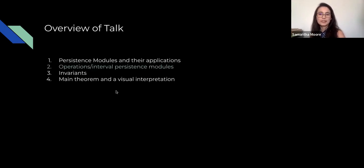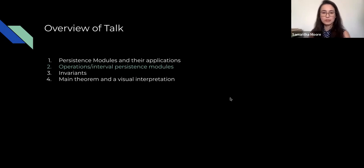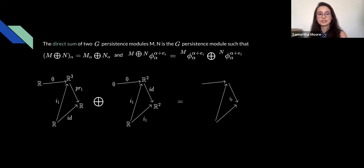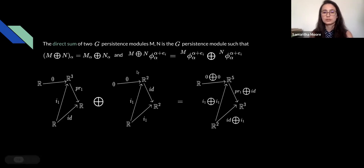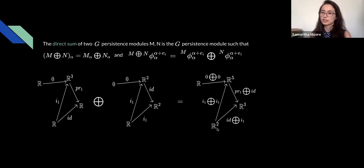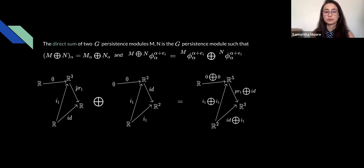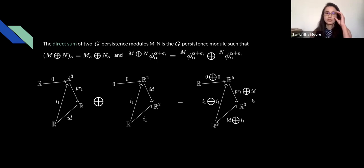Now some vocabulary related to persistence modules. The direct sum of two persistence modules M and N is again a persistence module with the same underlying graph, taking the direct sum pointwise. For example, R ⊕ R gives R^2, R ⊕ R^2 gives R^3, and R^3 ⊕ R^2 gives R^5. Maps are also taken as direct sums — for example, the projection map direct sum the identity map on R^2.